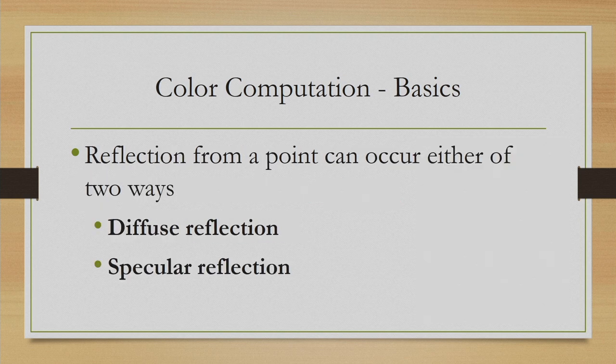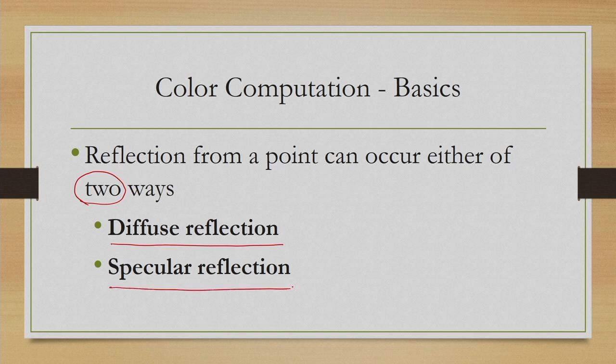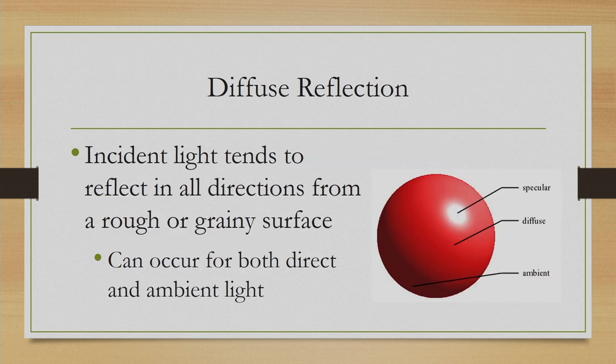Reflection from a point can occur in two ways. One type of reflection is called diffuse reflection and the other type is called specular reflection. Let us try to understand these different types of reflections with an illustrative example.